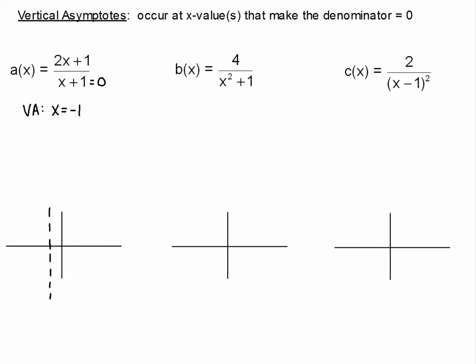I'm also going to tell you what the horizontal asymptote is for each of these three examples — I'll explain why in the next tutorial. The horizontal asymptote for this equation is y equals 2, and I'm going to dash that in. Some of you might already know why it's true from Algebra 2.